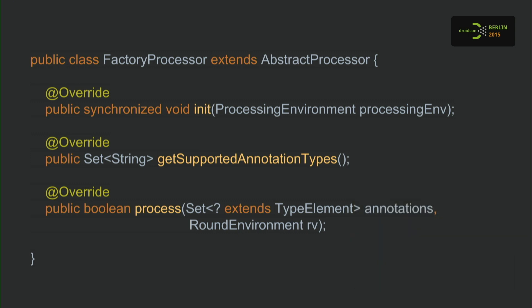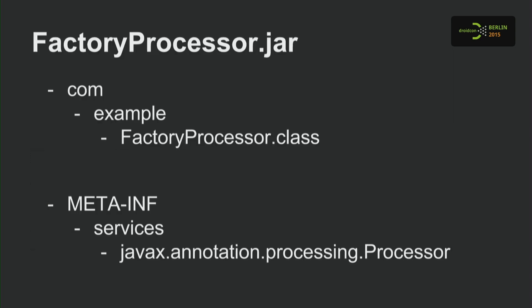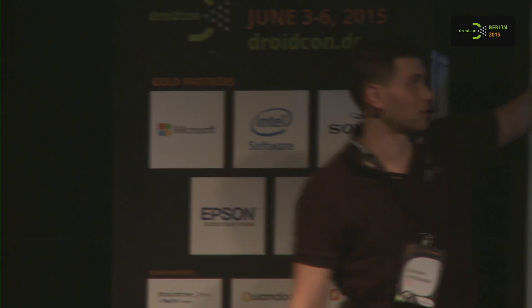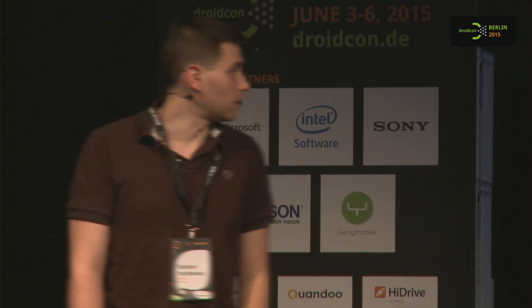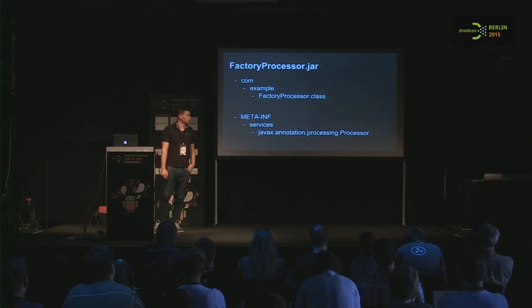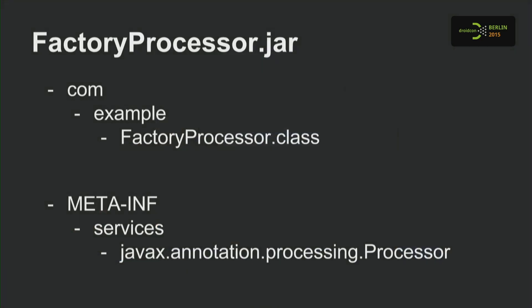Those three methods — init, getSupportedAnnotationTypes, and process — are basically what we override to get started. To register the annotation processor to the Java compiler, we pack it into a jar like any other Java artifact, and we also provide a META-INF/services folder containing a single file called javax.annotation.processing.Processor. In this file, we write the fully qualified class name of our FactoryProcessor. Java C scans all jars in your build path, checks for that file, and registers the annotation processor.